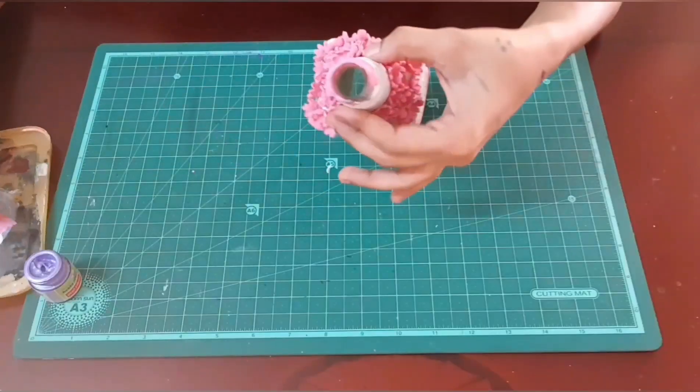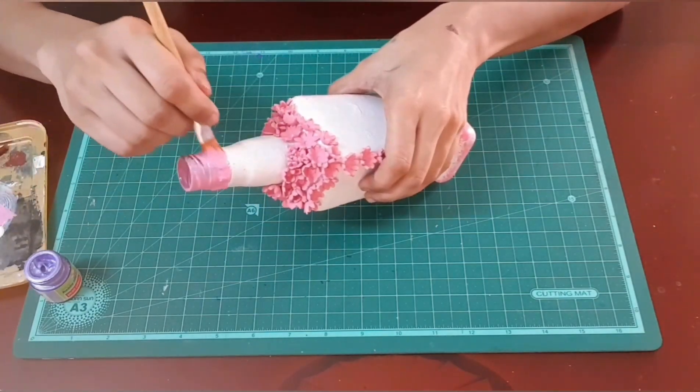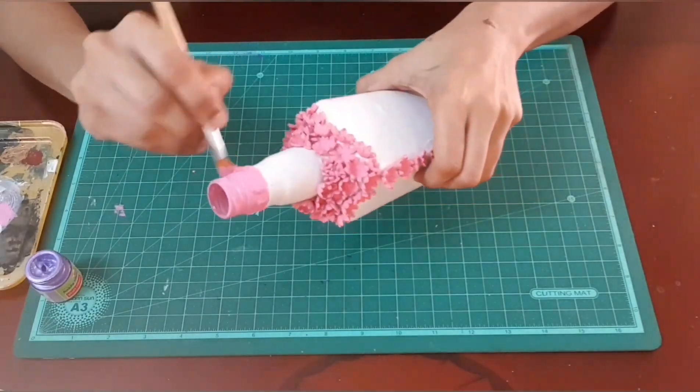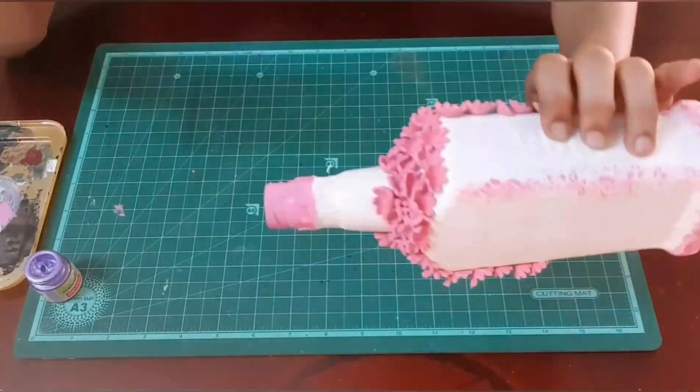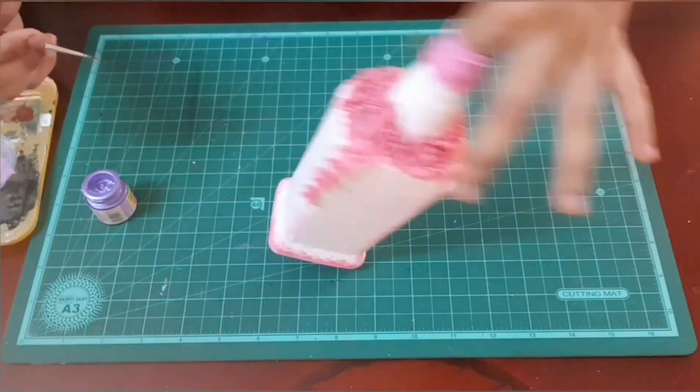You can use the same pink to cover the neck or you can use threads or you can use any kind of material. You can even use the clay as well. I've taken purple pearl color. I'm just going to give a detail inside the flowers.